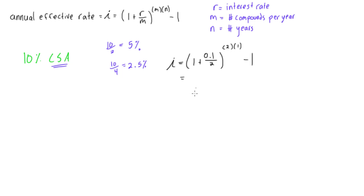This will reduce to, we will have 1.05 squared minus 1, and we'll get our annual interest, or annual effective rate is actually going to be 0.1025.